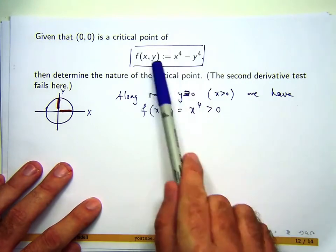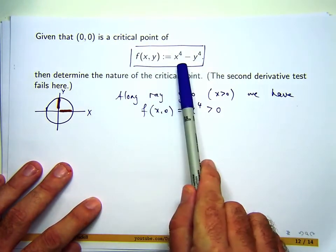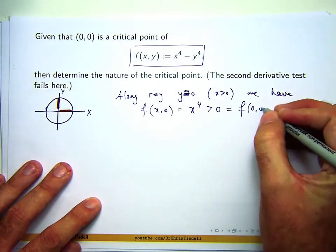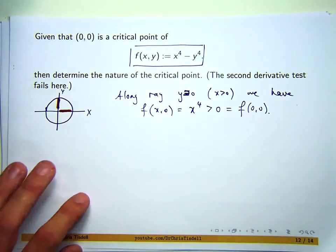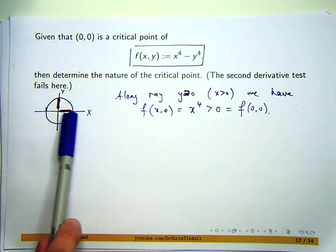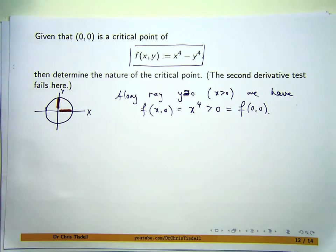And what's the value of my function at the critical point? Zero. So I can conclude the following: along any point inside this little part of the disk or the circle on the x-axis, there's always a point that the function is positive.